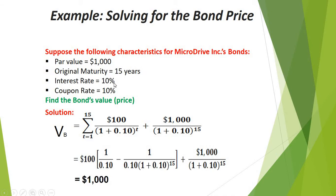Notice that the market interest rate and coupon rate are both 10%. If the market interest rate and coupon rate of a bond are the same, the value of the bond will always be equal to its par value.